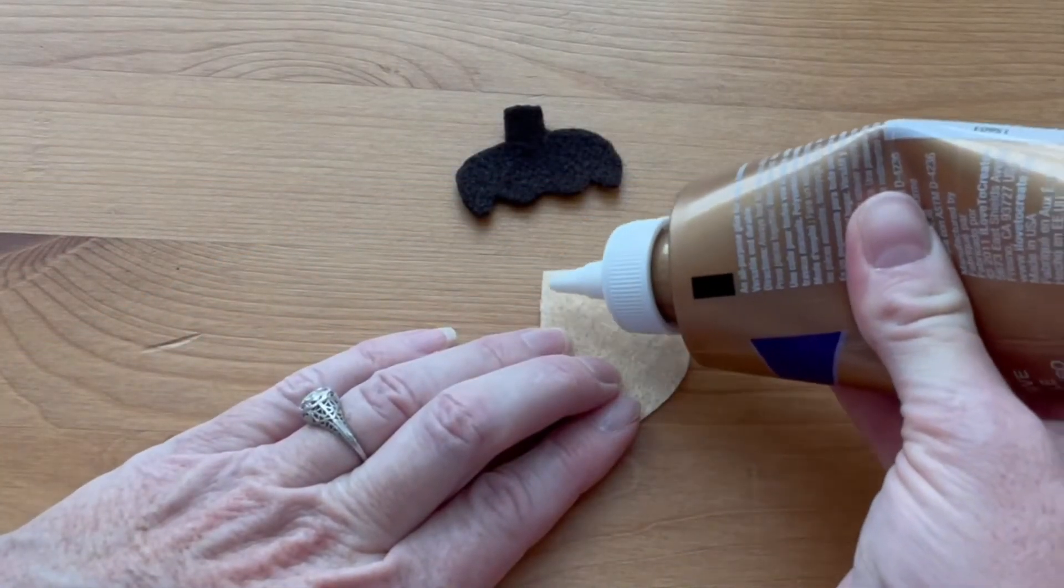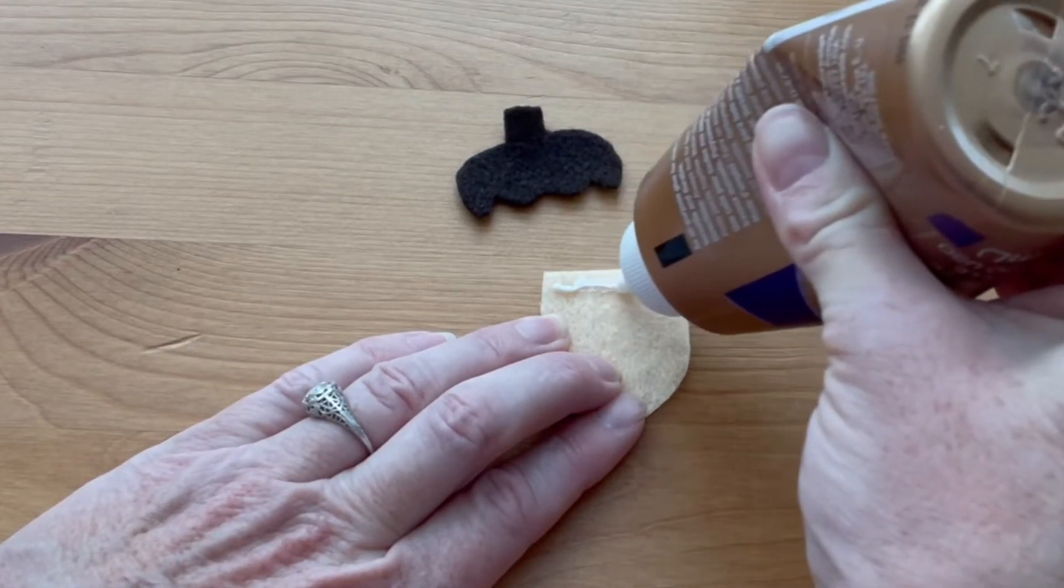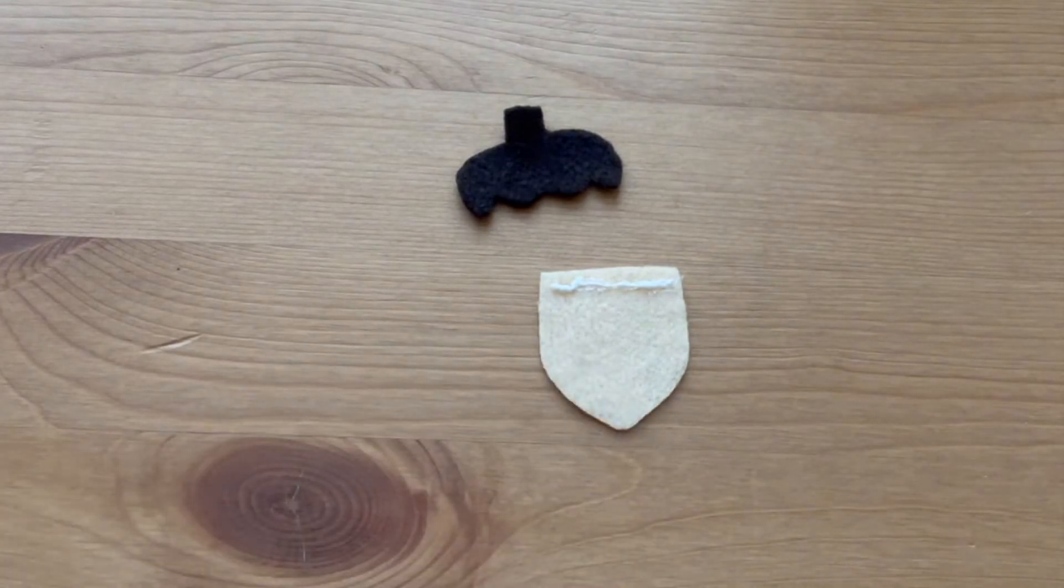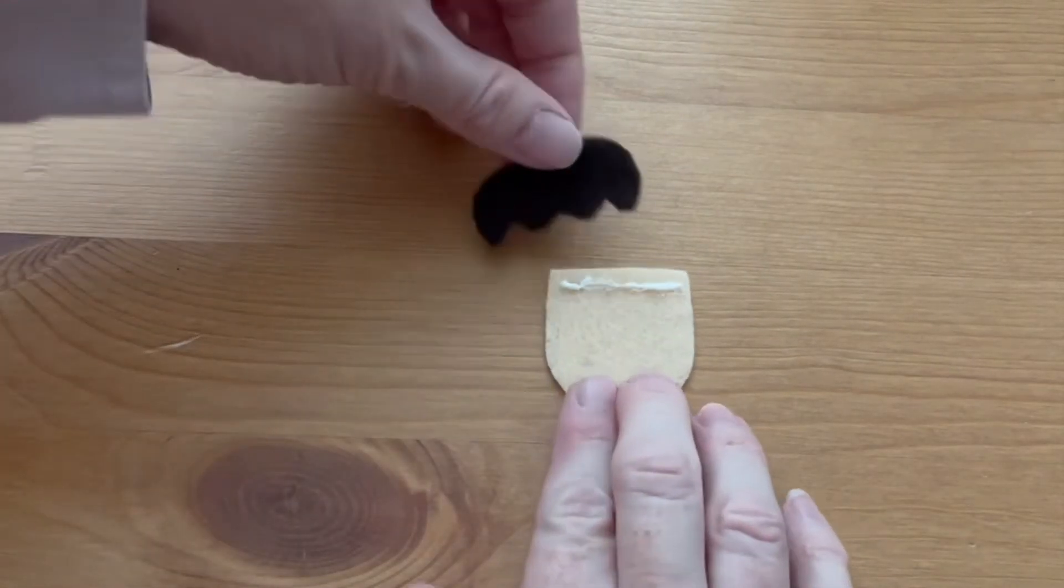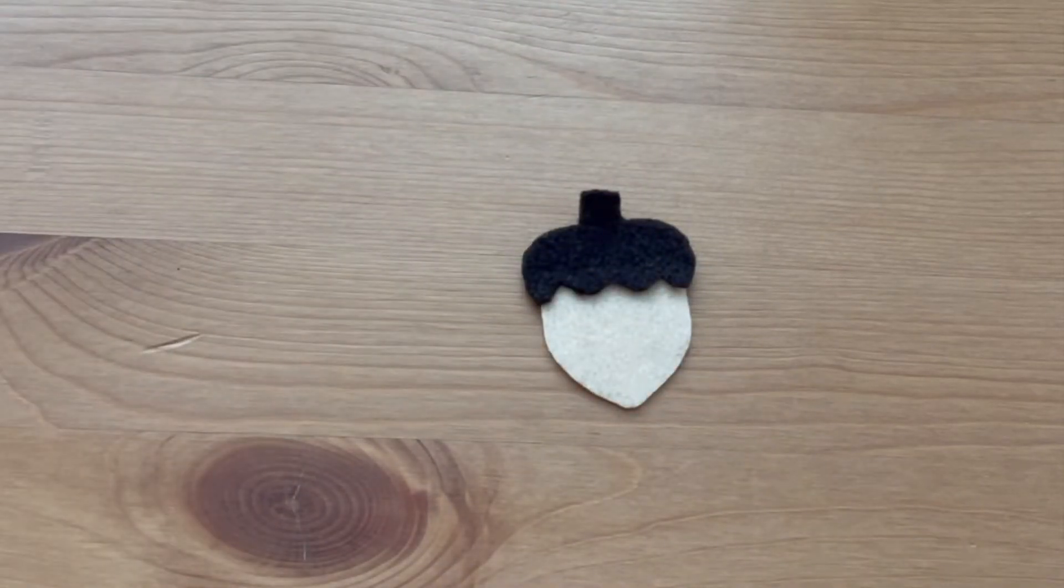Now glue the caps onto the acorns. Just use a thin line of craft or fabric glue and let those dry before you continue.